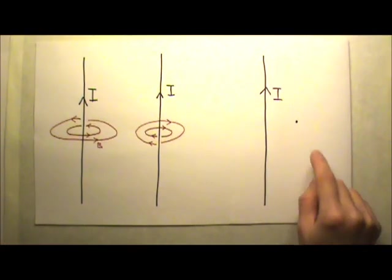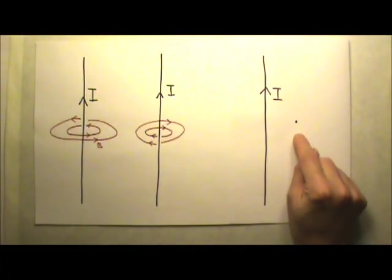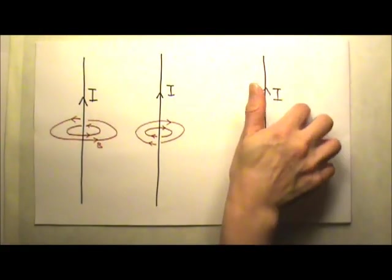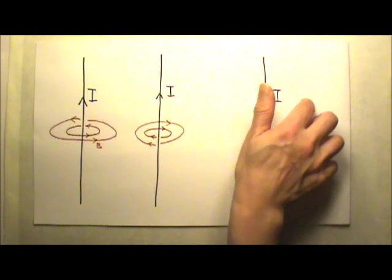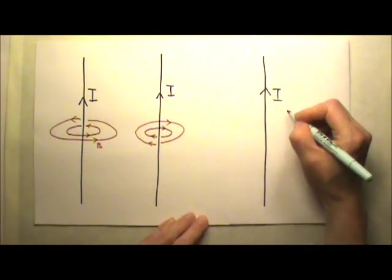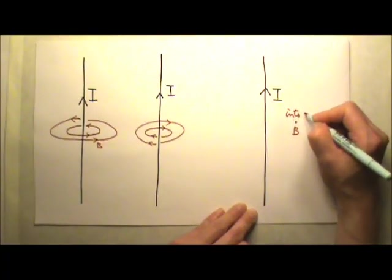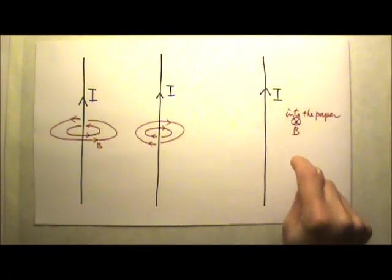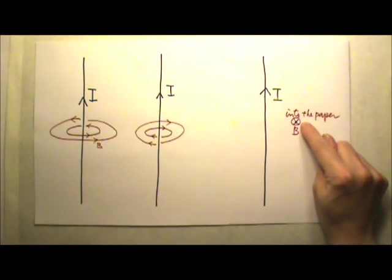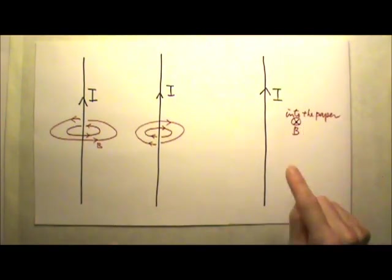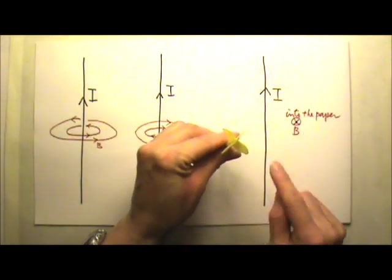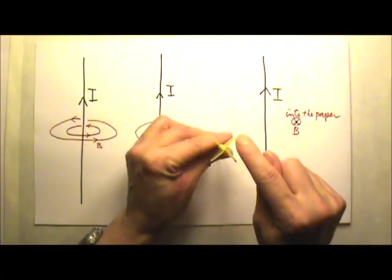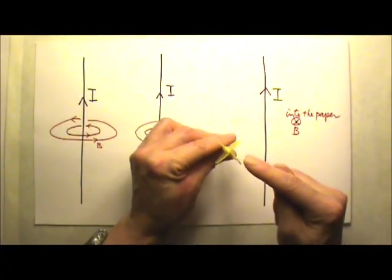I can also ask about the direction of the magnetic field on the right side of this long straight current. Using my thumb to follow the current, on the right side the field goes into the paper. When the direction goes into the paper or away from us, we draw an X with a circle around it, because if an arrow travels away from us, we would see the feather tail — and the X represents that feather tail.